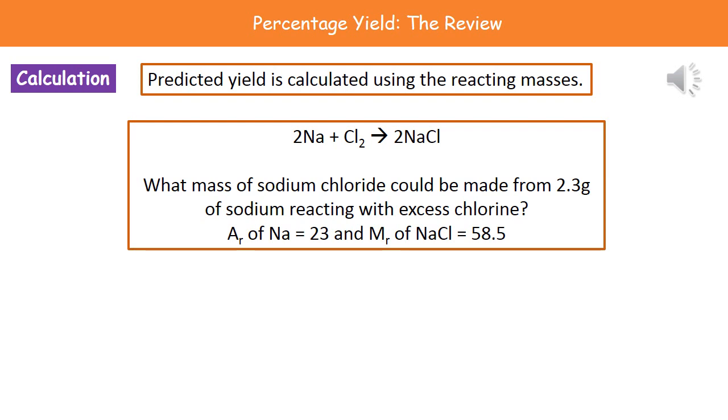At the top there, what we actually have are the chemicals already in their balanced equation. So we've got 2Na + Cl₂ → 2NaCl. Now the question you're likely to be asked is something along the lines of what mass of sodium chloride could be made from 2.3 grams of sodium reacting with excess chlorine. Do notice the fact they do give you the atomic mass of sodium, which is 23, and the molecular mass of sodium chloride, which is 58.5, in the question itself.